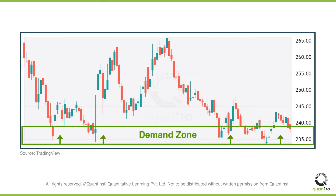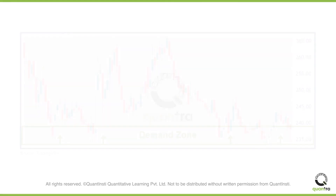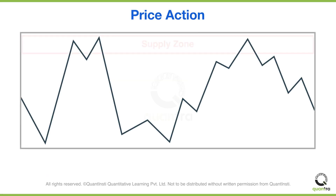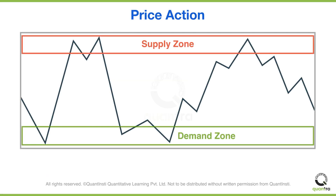For example, on the same price chart, you can observe that whenever the price reaches between $235 to $240, it reverses and starts increasing. This is because the buyers in this price zone are greater than the sellers, which indicates that the demand is greater than the supply. This is known as a demand zone. By identifying the supply and demand zones, price action trading can be done.